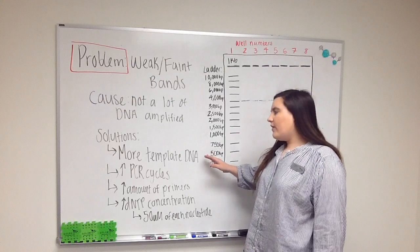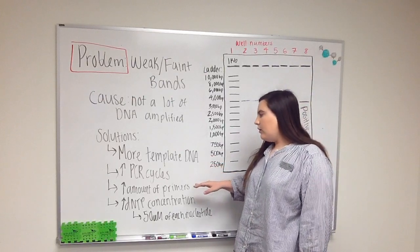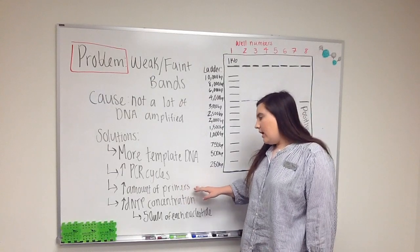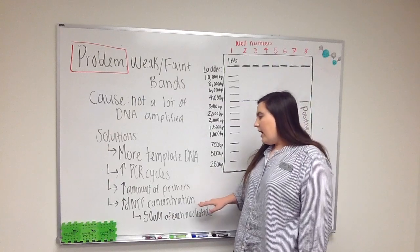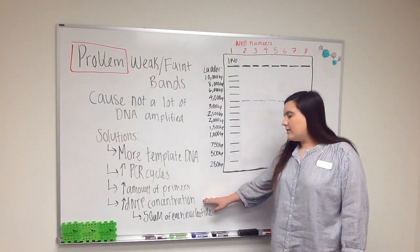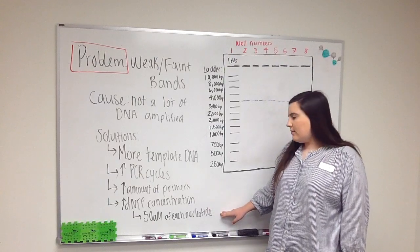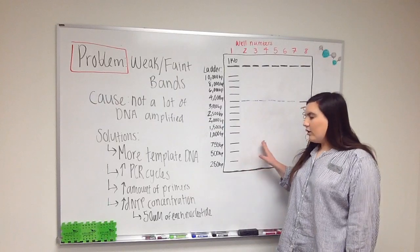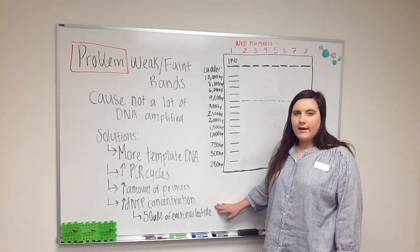Some solutions for this is that you might need to add more template DNA. You could also try increasing the amount of PCR cycles. Another thing you could do is increasing the amount of primers you use and you may also need to increase your DNTP concentration. The standard DNTP concentration is usually around 50 micromolars of each nucleotide. If you're trying to amplify a large sequence though, you might need more than 50 micromolars of each nucleotide.